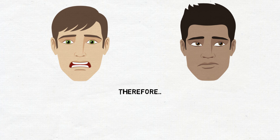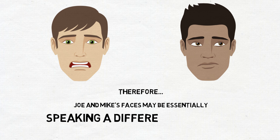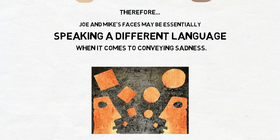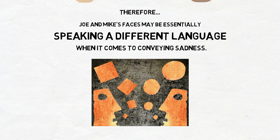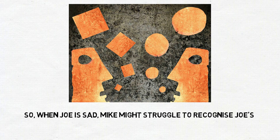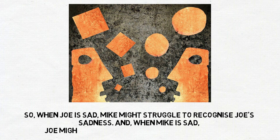Therefore, Joe and Mike's faces may be essentially speaking a different language when it comes to conveying sadness. As a result, when Joe is sad, Mike might struggle to recognise Joe's sadness.